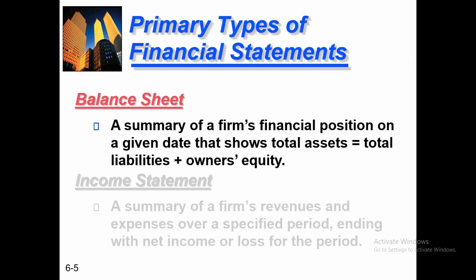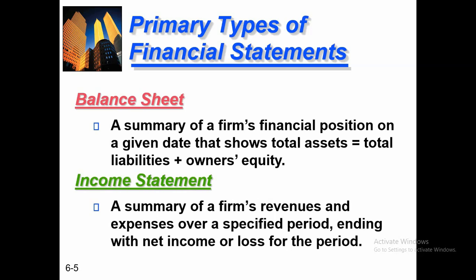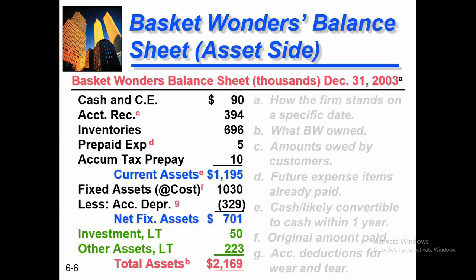Regarding the primary types of financial statements, there are three basic financial statements: one is the balance sheet, the other is the income statement, and the third is the cash flow statement. The balance sheet is a summary of financial position on a given date showing total assets equal to total liabilities plus owner equity. The income statement is a summary of a firm's revenues and expenses over a specified period, ending with net income or net loss.